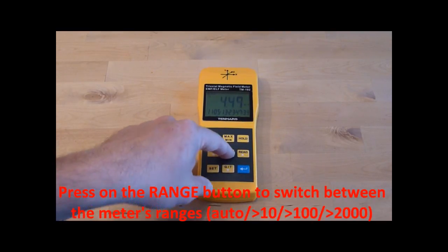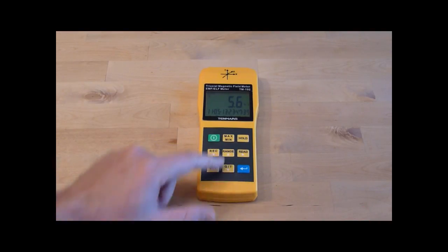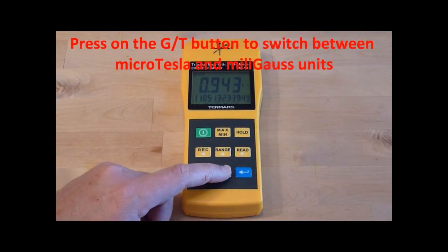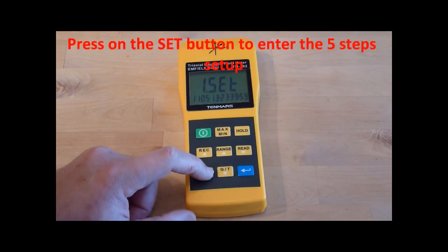Press the range button to switch between the meter's ranges. Press on the set button to enter the 5-step setup.